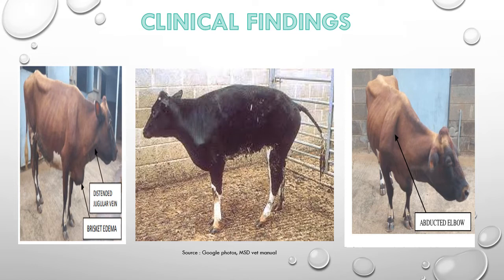This is the distended jugular vein. This is brisket edema. There is also the Arbeck condition and abducted elbow condition shown in the reference images.